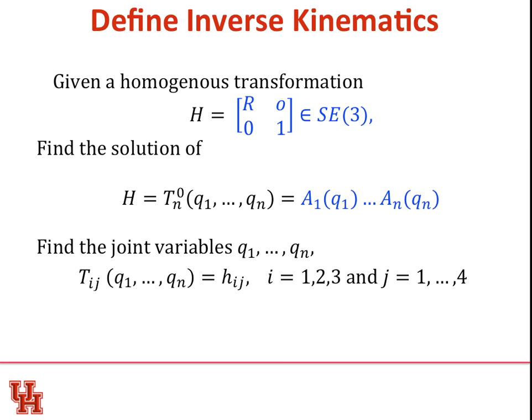So mathematically, our problem is we're given a homogenous transformation, some element in SE3. Find the solution that the Q1 through N values for your N degrees of freedom such that you can replicate that H matrix. You can write that another way of saying, I'm trying to find the TIJ values. Remember that bottom row is always going to be 0, 0, 0, 1. So there are constraints that you can work with as you're solving this.